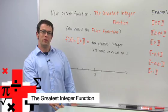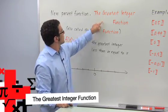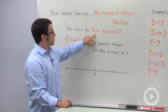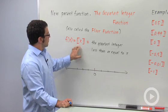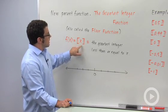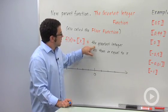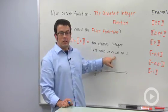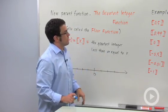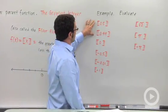I want to talk about a new parent function called the greatest integer function, sometimes also called the floor function. This is the symbol for it: the greatest integer of x. The definition is the greatest integer less than or equal to x. Let's evaluate it for a couple of numbers.